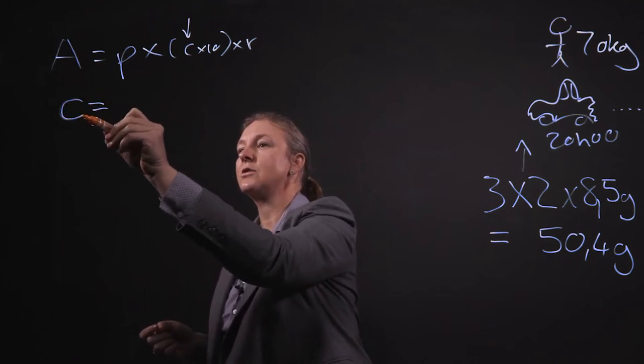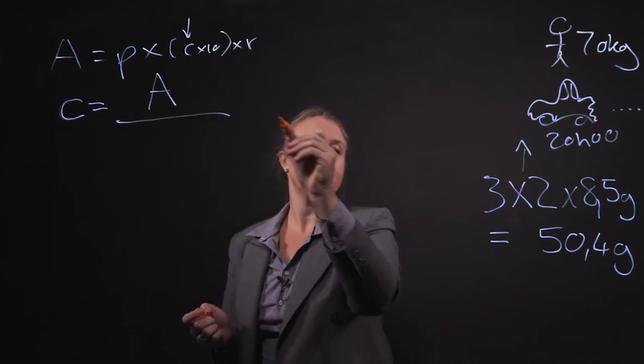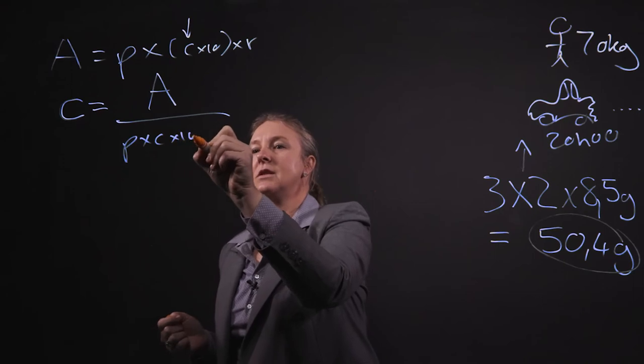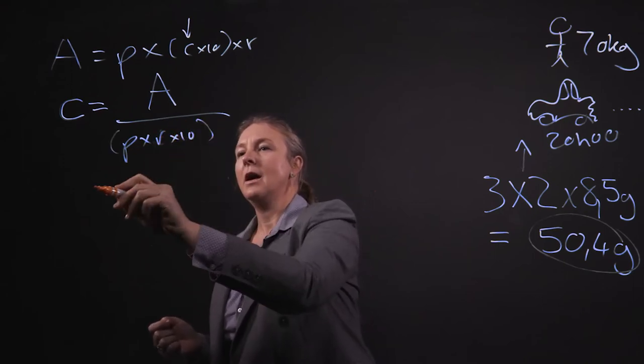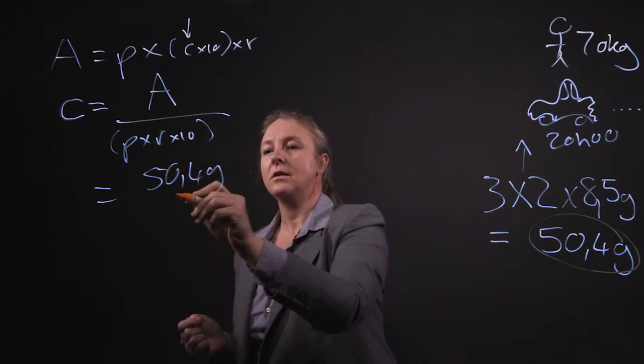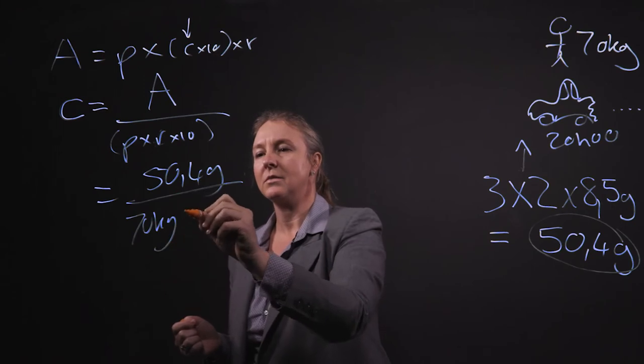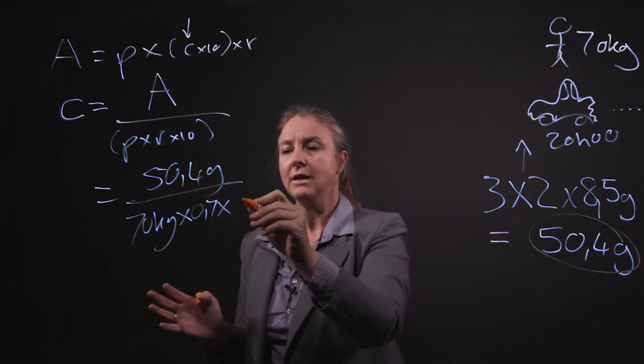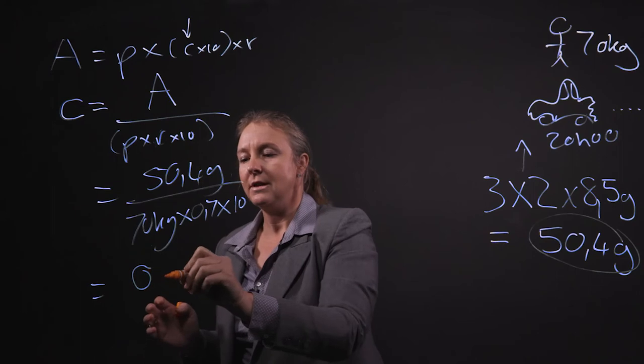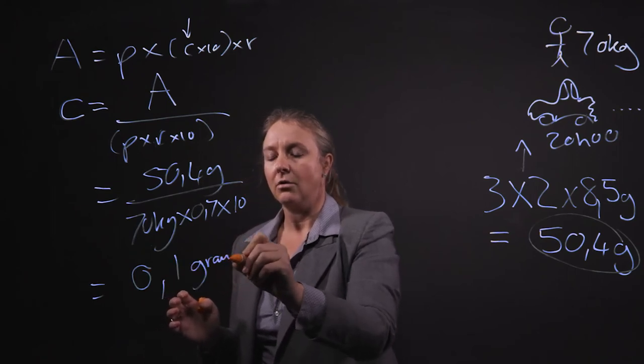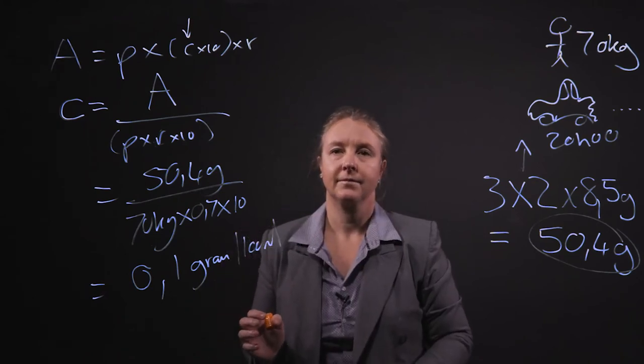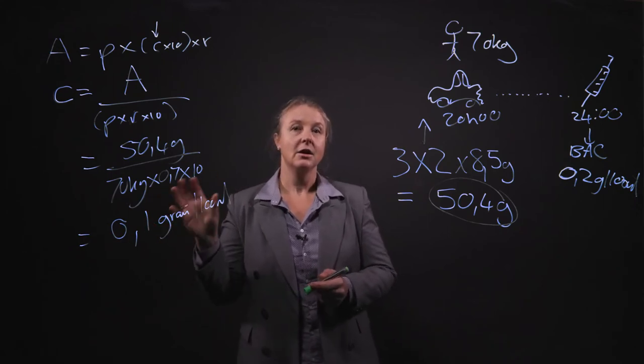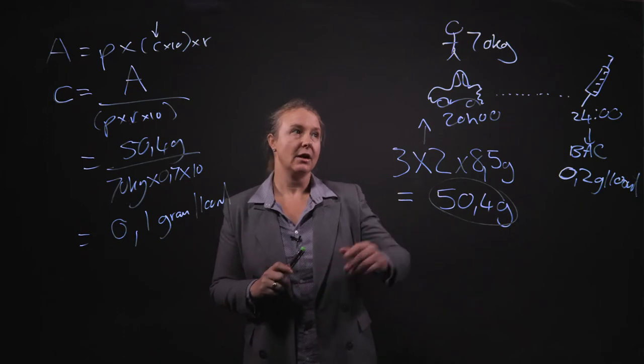To work out the blood alcohol concentration, we would take the amount of alcohol, which we've just calculated here, and we're going to put this into the equation, where we've got P times C times 10. Sorry, not the C, but let's just put the R in there. And let's work this out. We said it's 70 kilograms and we'll work out with a distribution factor of about 0.7 if he's an average weight. And if we do this calculation, we get to 0.1 grams per 100 moles. So let's see how much of this supposedly amount of alcohol that is taken would still be present in his blood at the time point of 12 o'clock.